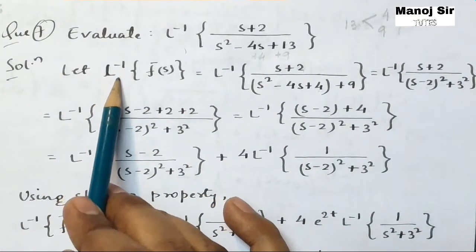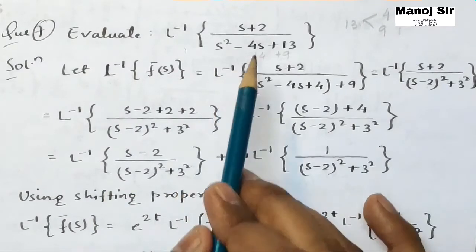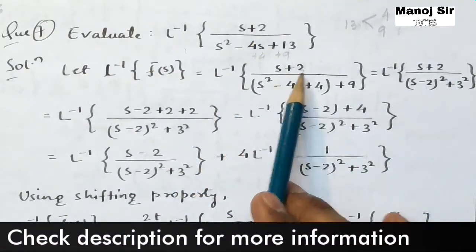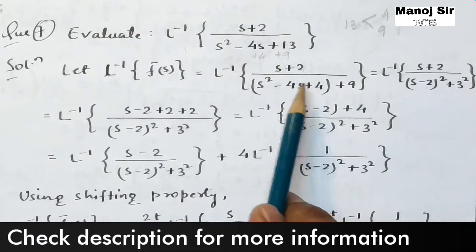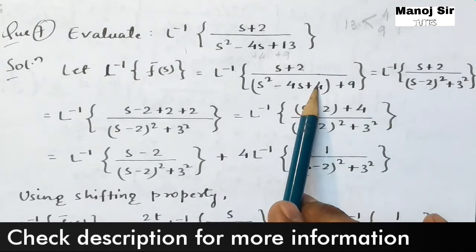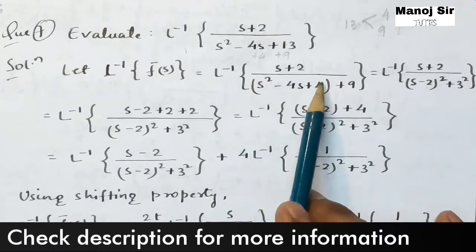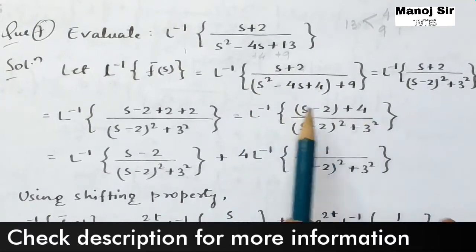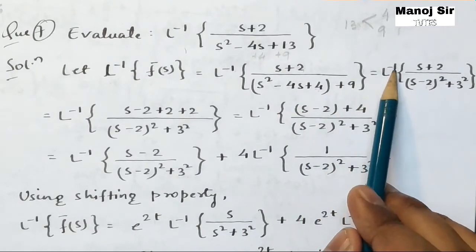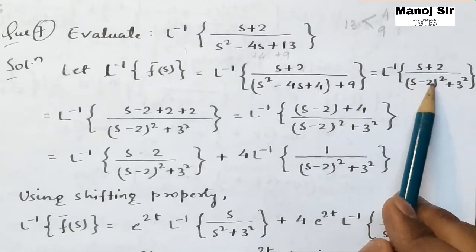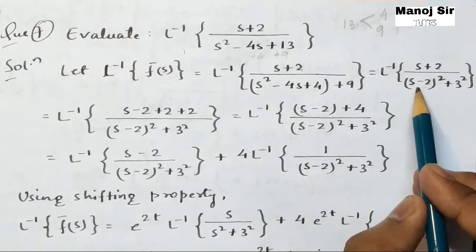Let the inverse Laplace transform of f̄(s) equal the inverse Laplace transform of (s + 2) upon (s² − 4s + 4 + 9). Since we have written 4, we are left with only 9. We put a bracket over the denominator because it becomes (s − 2)² + k², so this equals the inverse Laplace transform of (s + 2) upon (s − 2)² + 3².